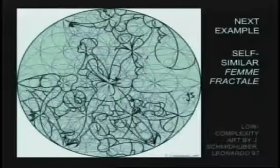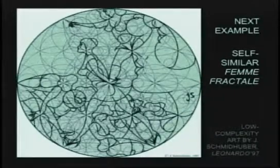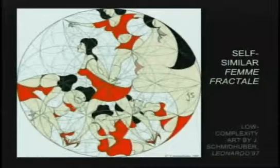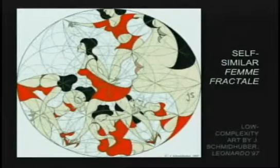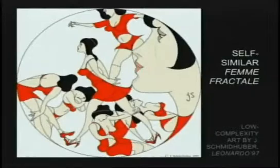That would be an example of low complexity art, which I defined in 1997 in a journal called Leonardo, dedicated to such things. The same scheme can be used to very compactly encode drawings that follow these basic rules — here we see a self-similar thumb fractal. I'm removing all the circles I'm not using, leaving only the green circles needed to specify the details of this drawing. Finally, we have again a low complexity artwork that can be encoded by very, very few bits of information.